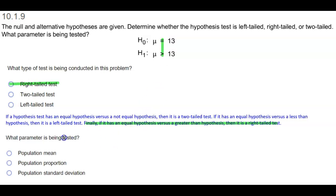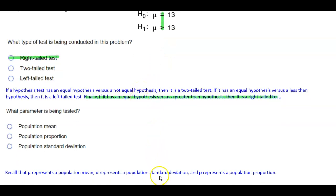Now the next thing it says, what parameter is being tested? That means we need to look at the symbols. So what does this symbol represent? Let's recall the symbols.